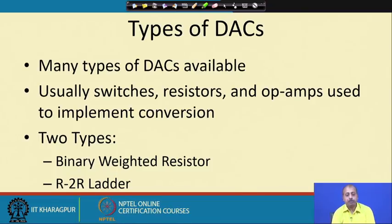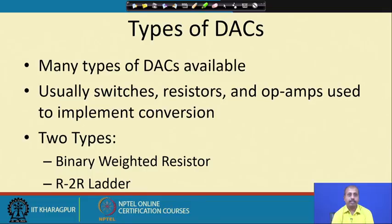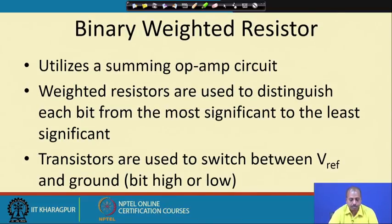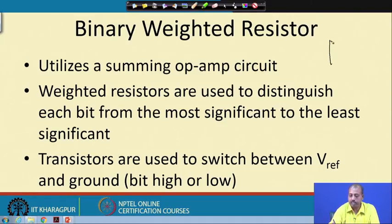There are many types of DACs available. They typically use switches, resistances, and operational amplifiers to do the conversion. We will look into two types: one is the binary weighted resistor DAC and another is the R2R ladder type resistor DAC. The first type we look at is the binary weighted resistor based digital-to-analog converter, which uses a summing operational amplifier circuit.